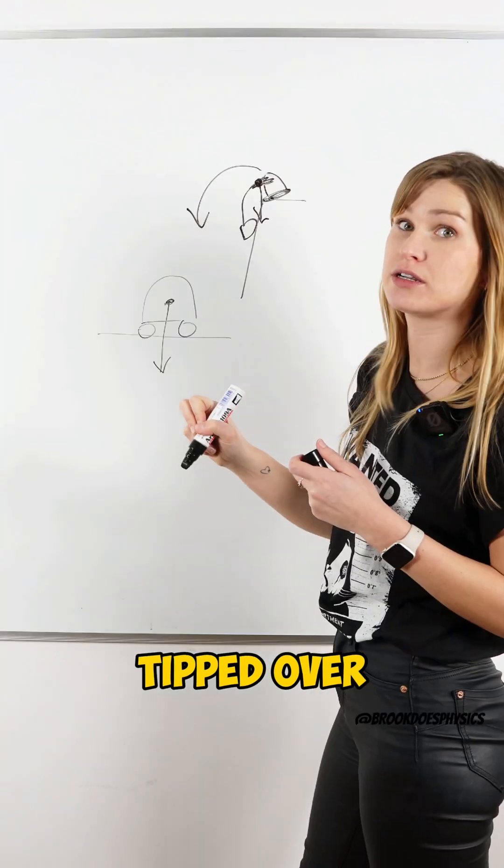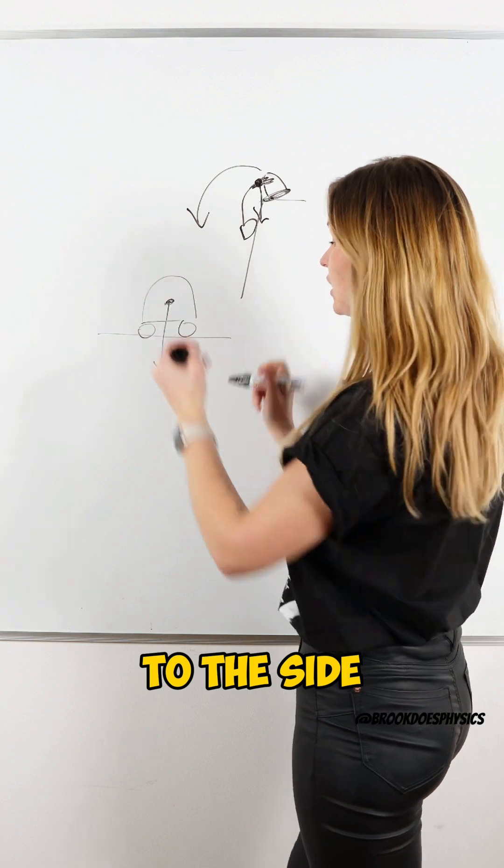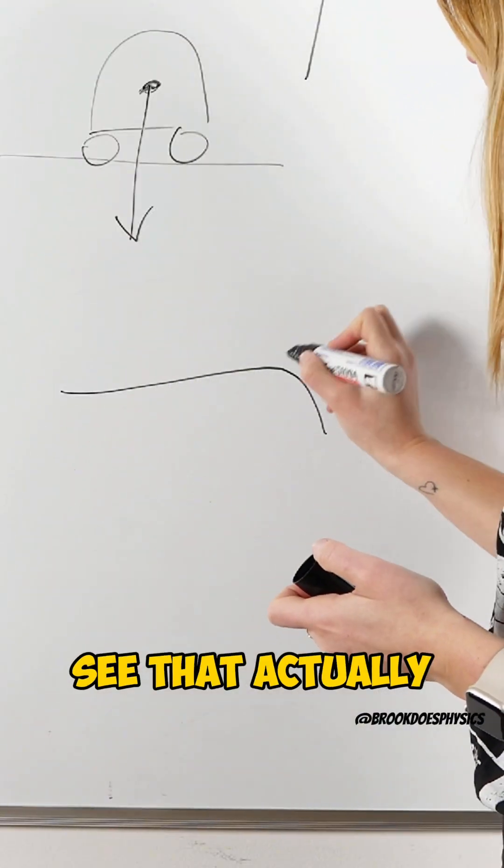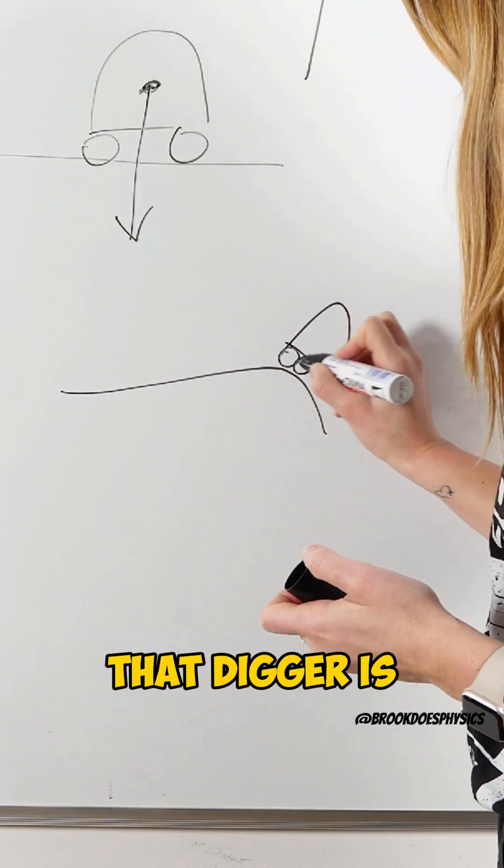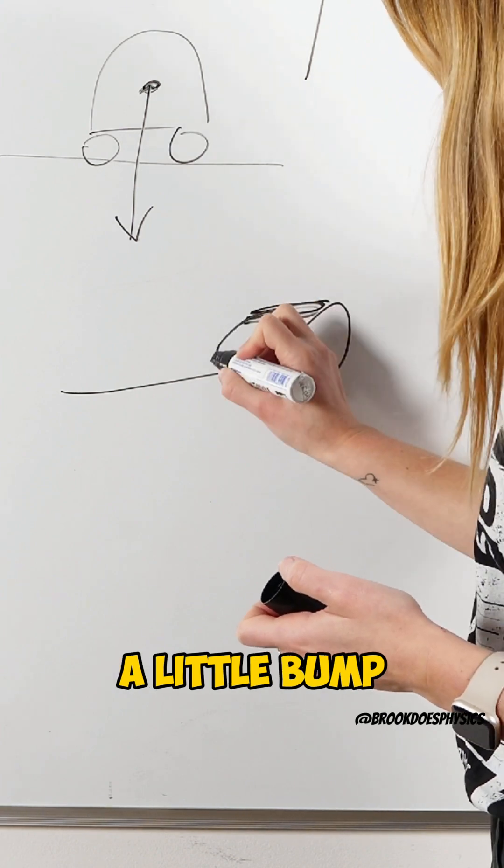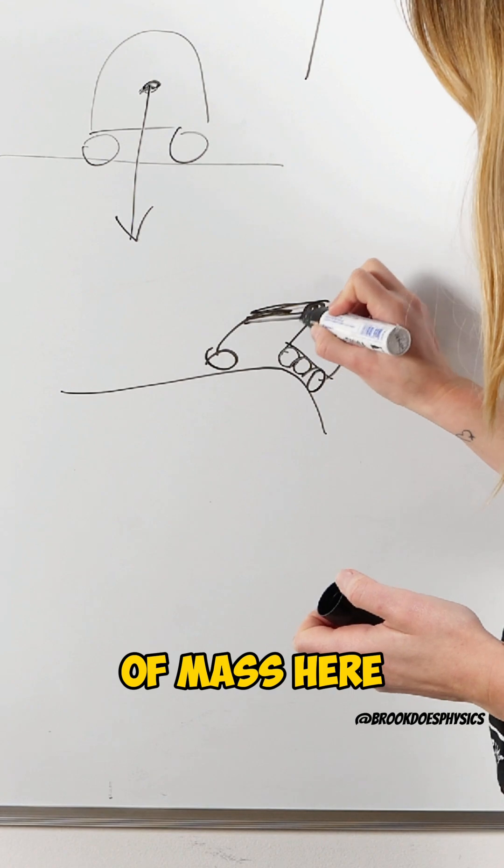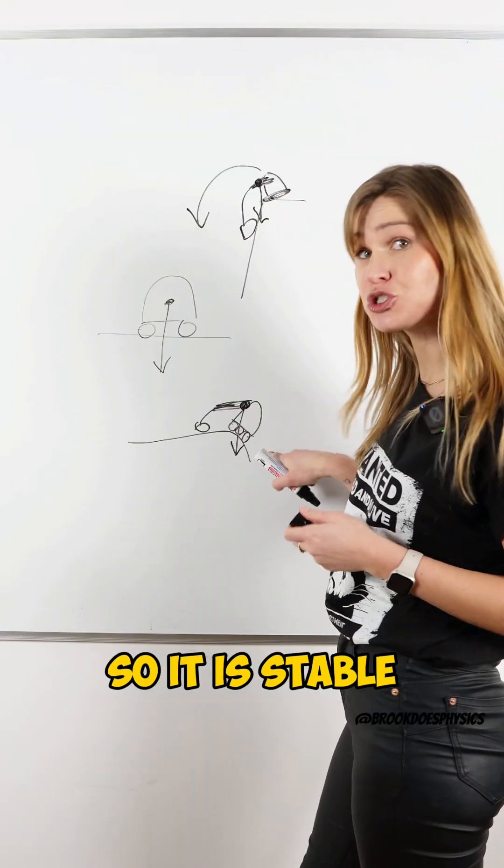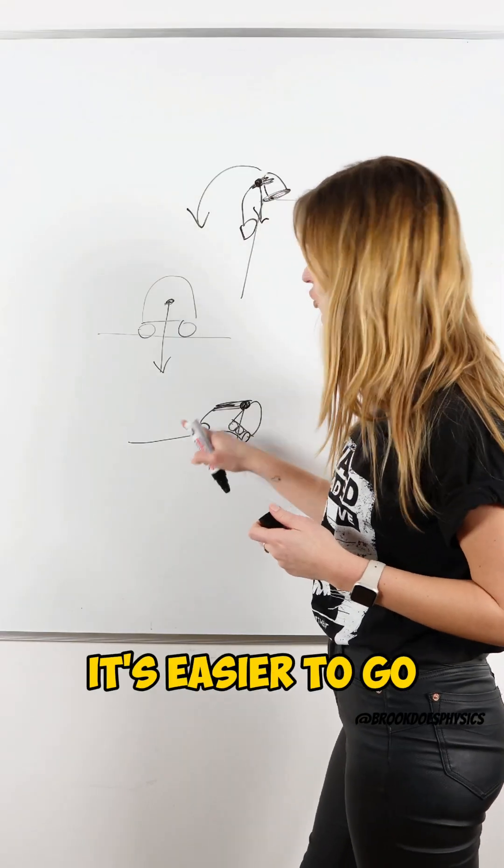But if you turned your phone to the side, you would see that actually what's happening is that digger is just going over a little bump, and its center of mass here does act through its base. So it is stable, and that's why it's able to go over that bump.